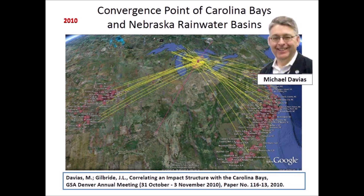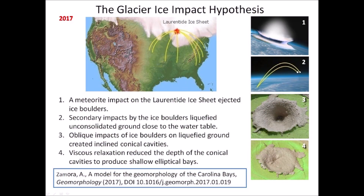In 2010, Davias and Gilbride calculated the convergence point of the Carolina Bays and the Nebraska Rainwater Basins at Saginaw Bay based on their axial orientations, using great-circle trajectories and taking into consideration the Coriolis effect caused by the rotation of the Earth. The Glacier Ice Impact Hypothesis, published in the journal Geomorphology in 2017, describes four mechanisms by which the Carolina Bays and the Nebraska Rainwater Basins may have formed: a meteorite impact on the Laurentide Ice Sheet ejected ice boulders in ballistic trajectories; the secondary impacts liquefied unconsolidated ground close to the water table; oblique impacts of ice boulders on liquefied ground created inclined conical cavities; and viscous relaxation reduced the depth of the conical cavities to produce shallow elliptical bays. Pictures of the experimental impacts contributed to the acceptance of the hypothesis for publication in the peer-reviewed journal.